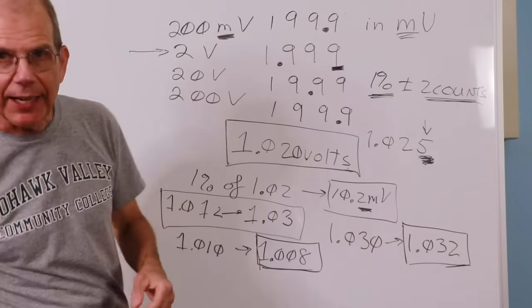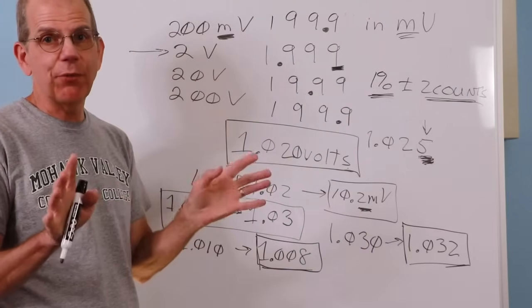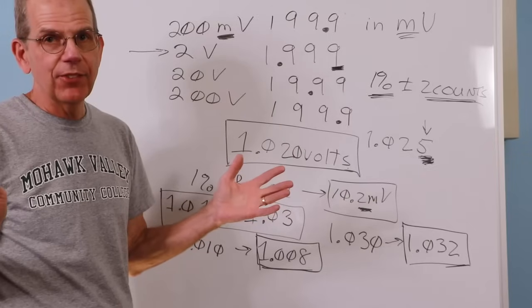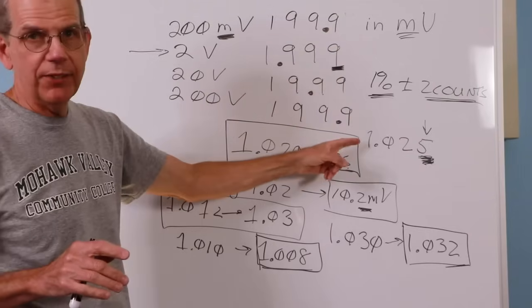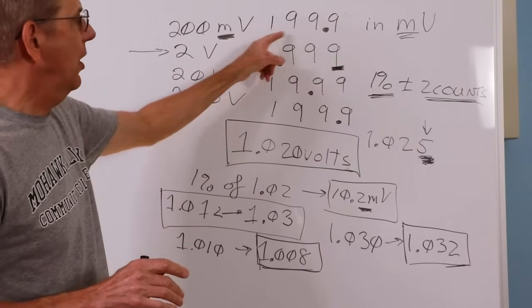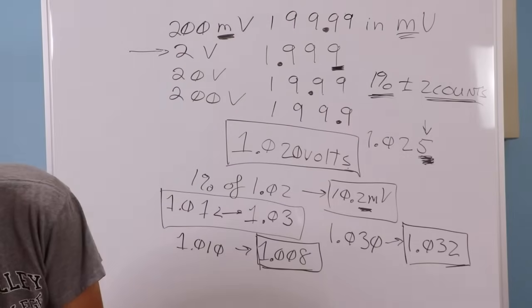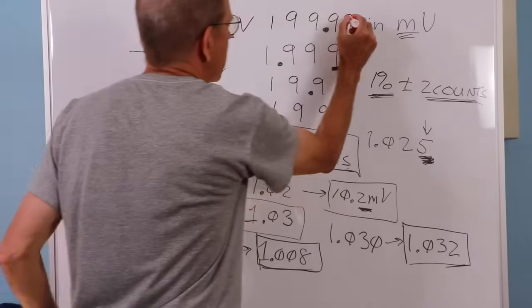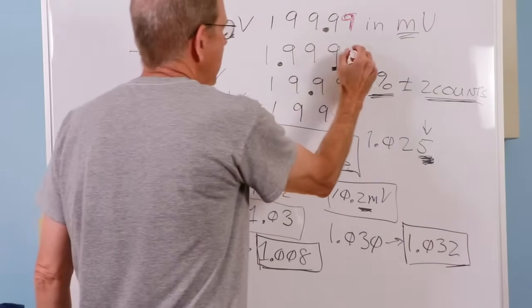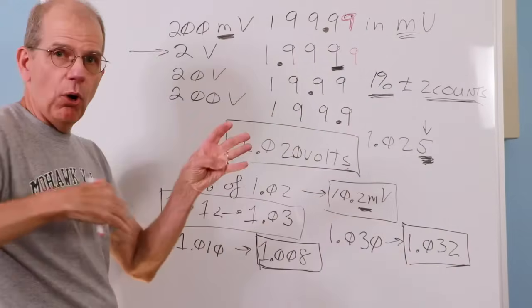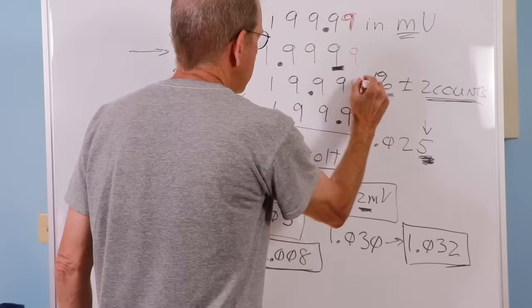Now, if you have deep pockets, you might find that you can get a, say, instead of three-and-a-half, you can get a four-and-a-half-digit meter. So what's the deal with a four-and-a-half-digit meter? Well, we'd actually add another digit to each one of these things. So a 200 millivolt scale would be 199.99. I'll tell you what, so there's no confusion. I'll put this in another color. All right, same thing over here. Instead of just 1.999, it'd be 1.9999 volts.